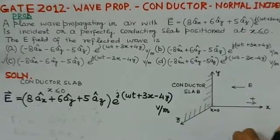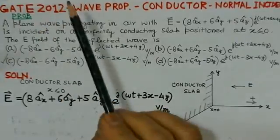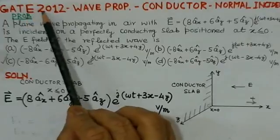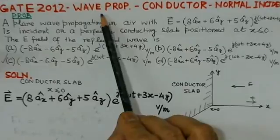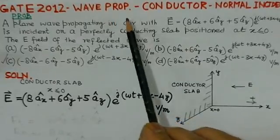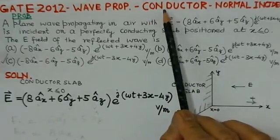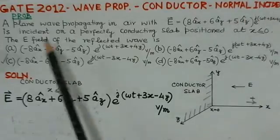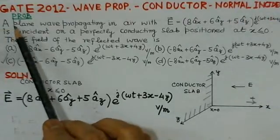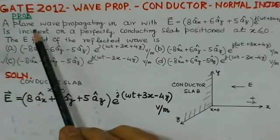The problem considered in this video is from GATE 2012, from the area of wave propagation with a conductor at normal incidence. We will first read out the problem and then give the solution.